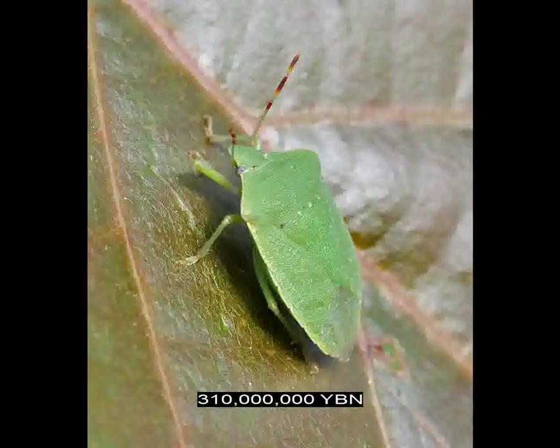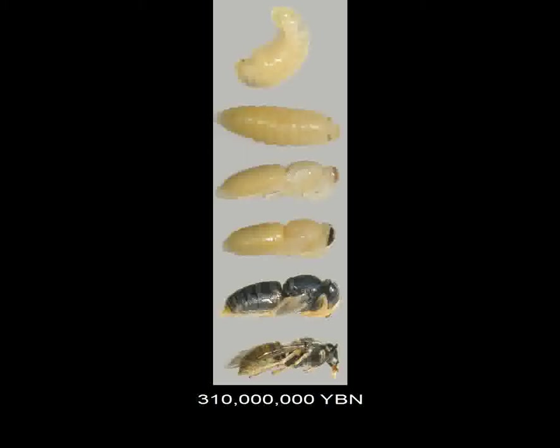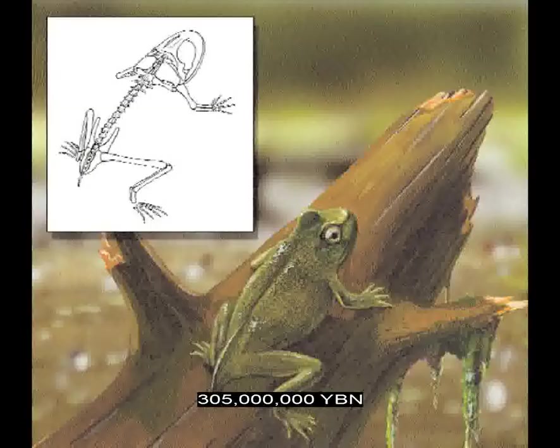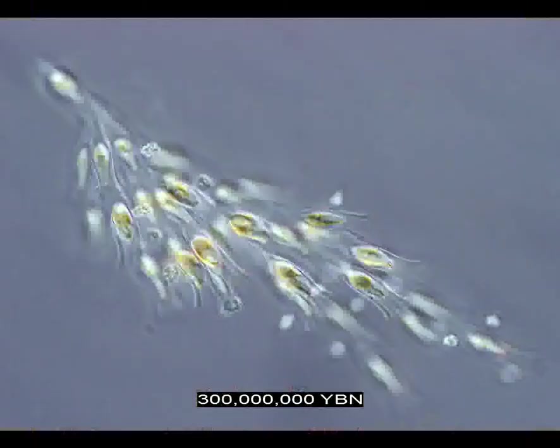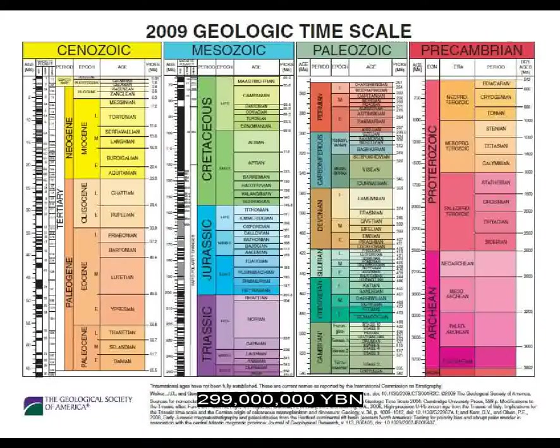Neoptera Holometabola — holometabolous insects with complete metamorphosis, ancestor of beetles, bees, true flies, and butterflies. Amphibians Anura — frogs and toads evolve. Stramenopiles golden algae, Chrysophyceae. End of the Carboniferous and start of the Permian period. Holometabola Coleoptera — beetles. Gymnosperms ginkgos. Holometabola Hymenoptera — bees, ants, and wasps.